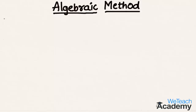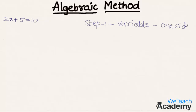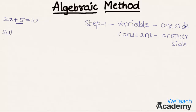Here we have an equation: 2x plus 5 equal to 10. The first step is to bring all the variable terms to one side and all the constant terms to another side. On the left hand side we have the constant term 5, so to remove that, let us subtract 5 on both sides (OBS = on both sides).